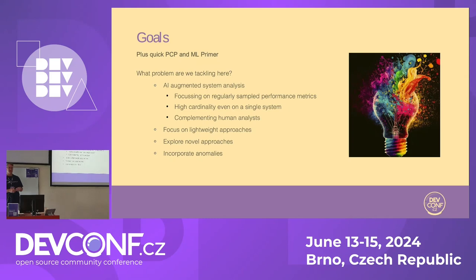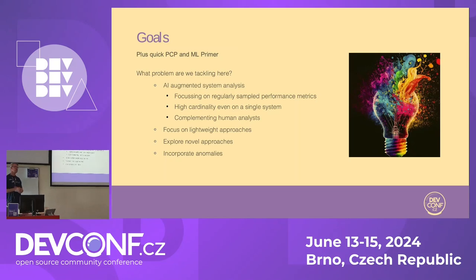The main idea is to do augmented system analysis. We don't want to try to solve performance analysis problems without a human being involved. The goal is really to help the person who's analyzing the system do a better job. The initial focus is PCP's domain — Performance Copilot is all about sampling of performance metrics predominantly. If you've not come across PCP before, you're probably familiar with similar systems like OpenTelemetry and Prometheus. This is the space that PCP plays in.